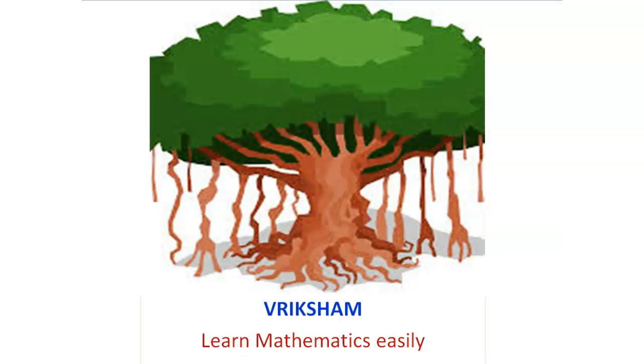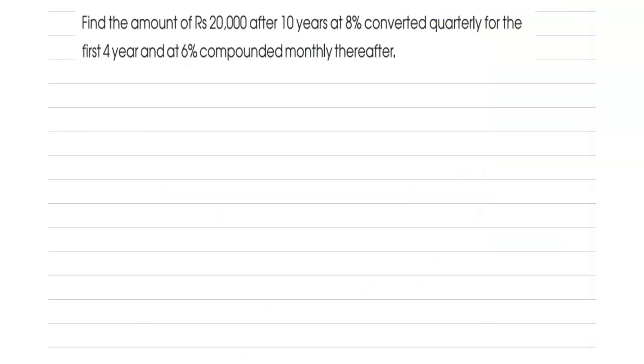Hi viewers, welcome to Brixham channel, learn mathematics easily. Here we are going to discuss the question: find the amount of rupees 20,000 after 10 years at 8% converted quarterly for the first four years and 6% compounded monthly thereafter.